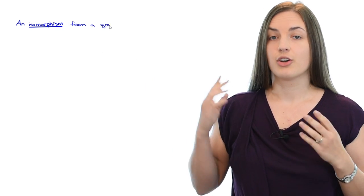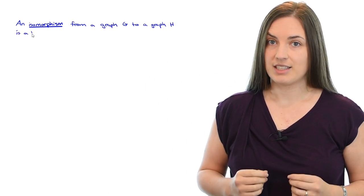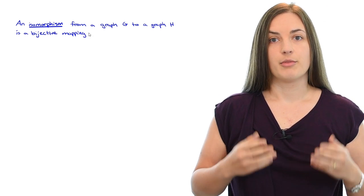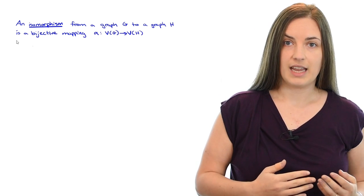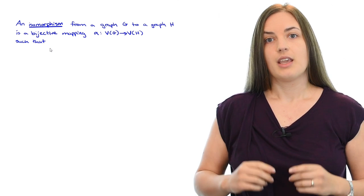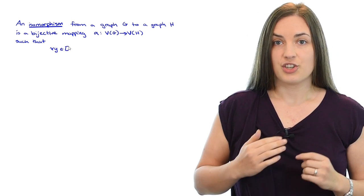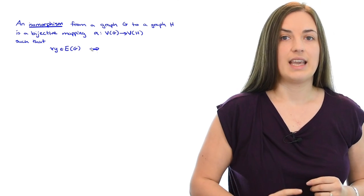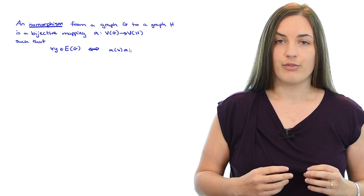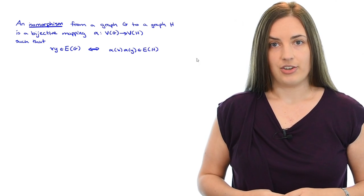Let's begin by reviewing what an isomorphism is. An isomorphism from a graph G to a graph H is a bijective mapping alpha from the vertices of G to the vertices of H such that XY is an edge of G if and only if alpha of X, alpha of Y is an edge in H.